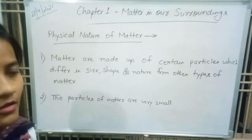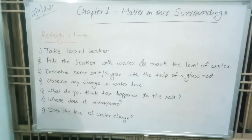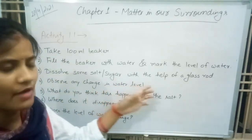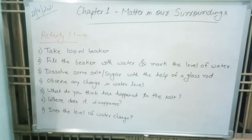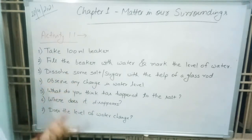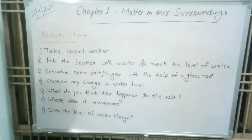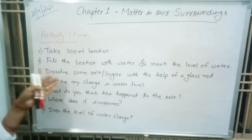Now we will discuss Activity 1.1. First of all, take a 100 ml beaker and fill it with water, then mark the level of water. Next, dissolve some salt or sugar in the water with the help of a glass rod. After adding sugar or salt in water, what do we observe? Is there any change in the water level? What has happened to the salt — does it appear or disappear? Does the level of water change?